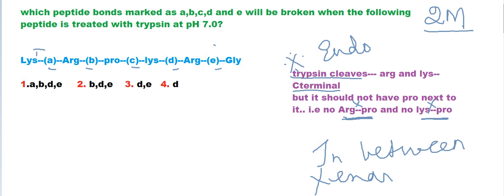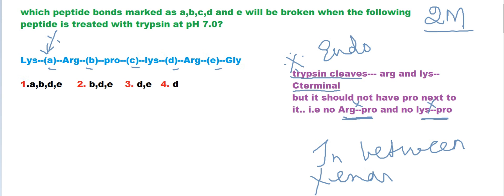This peptide is being treated with trypsin. We know trypsin cleaves arginine and lysine at the C-terminal. You might expect it will cleave over this region, bond A — but no, it won't, because this is present at the end, and trypsin is an endopeptidase, not an exopeptidase.